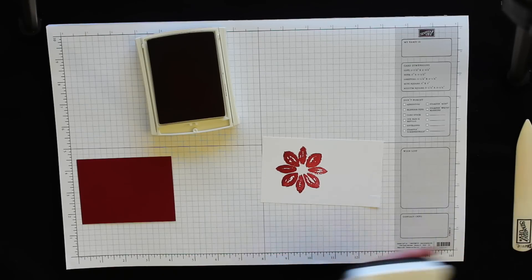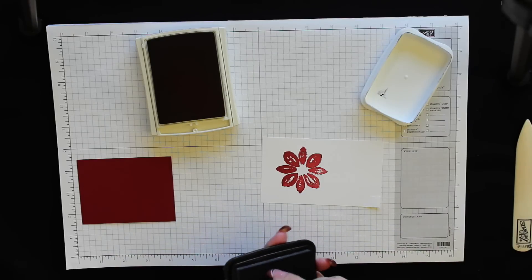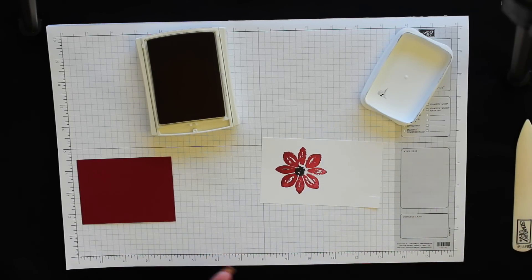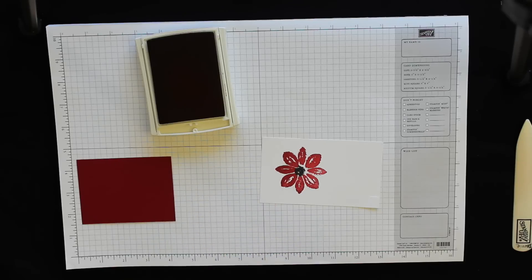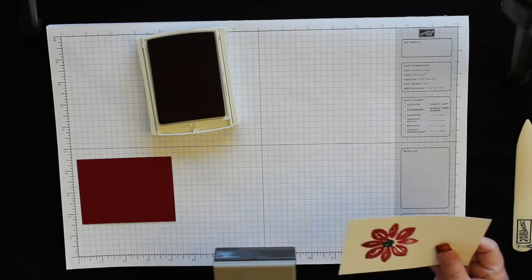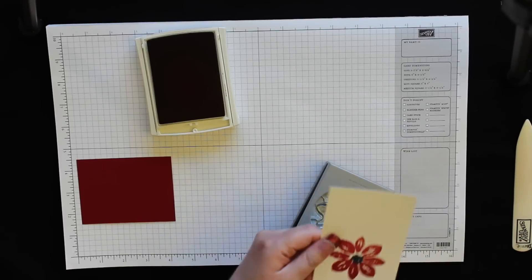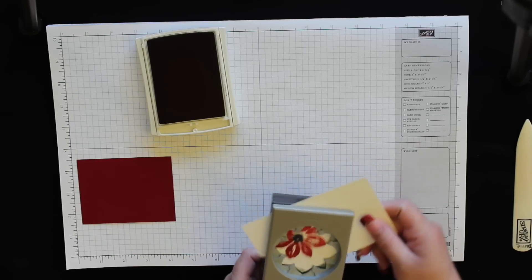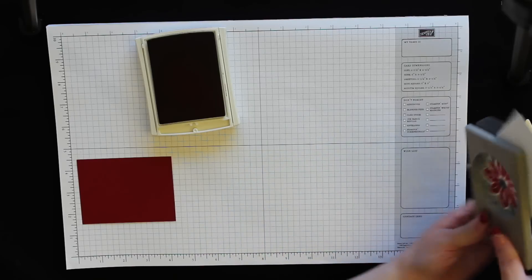I've got the flower center and I'm going to be stamping this in the Memento Tuxedo Black ink. And then this is the coordinating flower medallion punch. Center that in there and then punch it out.